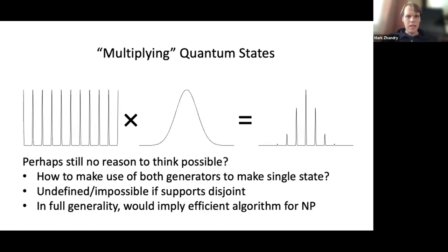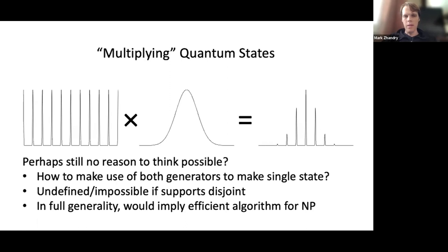Nevertheless, there's still maybe no reason to think this is possible. It looks superficially similar to the classical case — you have two quantum states and you need to use generators for both to produce some single state. Just like the classical case, it's going to be undefined if the supports are disjoint, and in full generality this would imply an efficient algorithm for NP. So we don't expect to be able to do this in full generality.